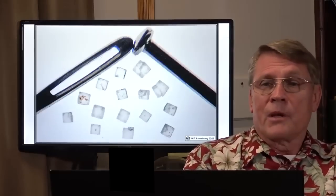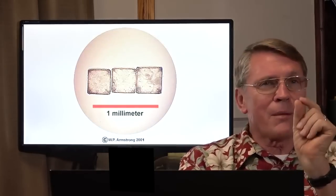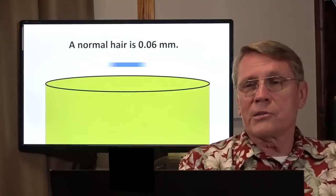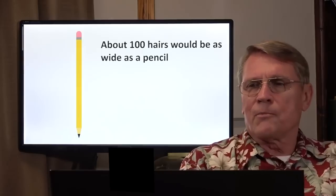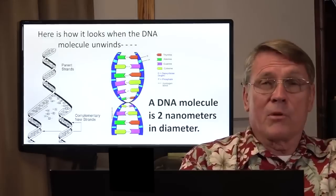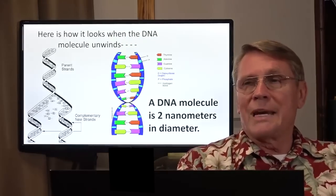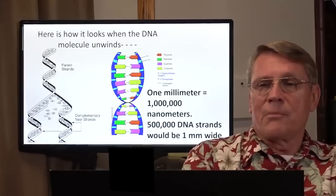Chromosomes are pretty tiny. Here's a grain of salt compared to the eye of a needle — salt grains are pretty tiny, it takes three of them to equal about a millimeter. The human hair is about 0.06 millimeters across. A DNA molecule is two nanometers in diameter — one millimeter is a million nanometers, so 500,000 DNA strands side by side would equal one millimeter wide. It would take 8.3 million DNA molecules laid side by side to be as wide as a single human hair.